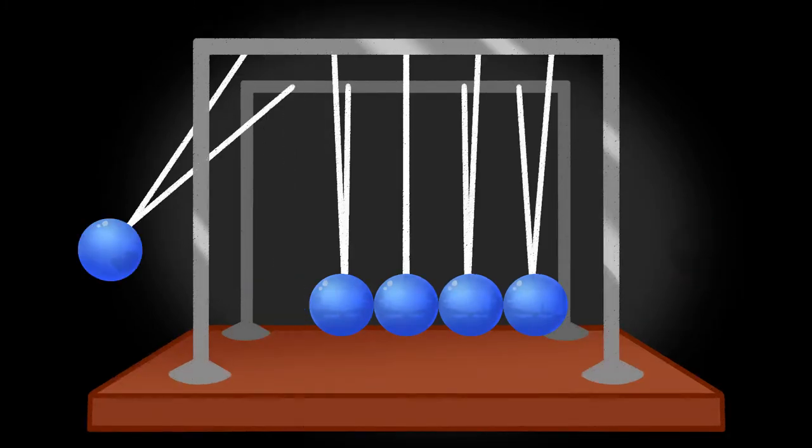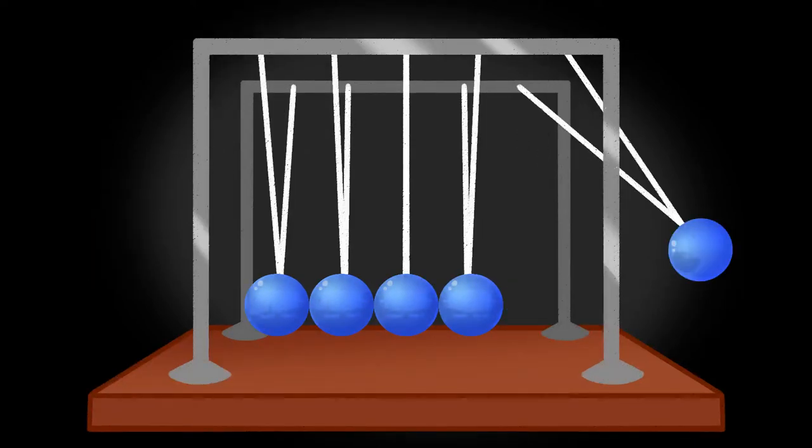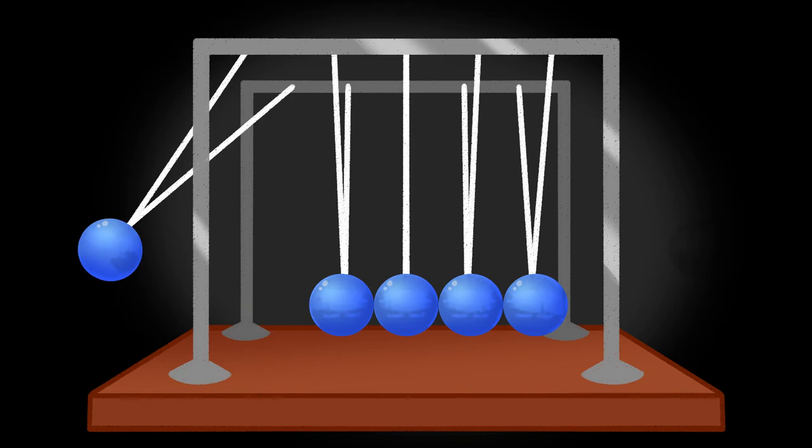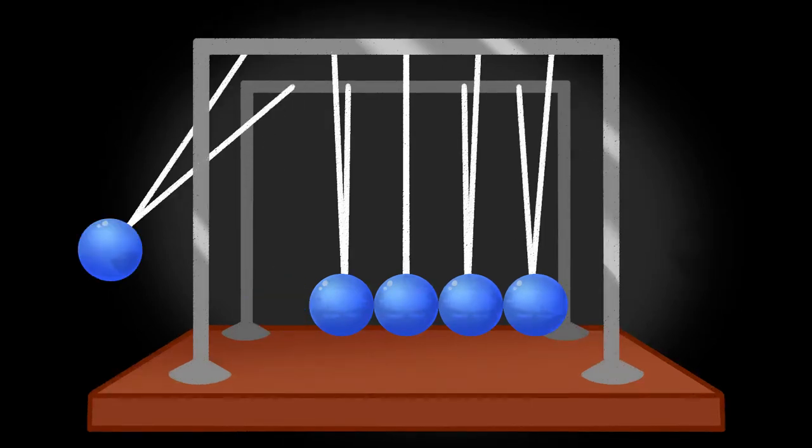The second law of motion states that the acceleration of an object is entirely dependent on two variables: the net force that's acting on an object and its mass. As the force on an object is increased, the acceleration is increased with it. But if the mass is increased, then the acceleration begins to decrease.